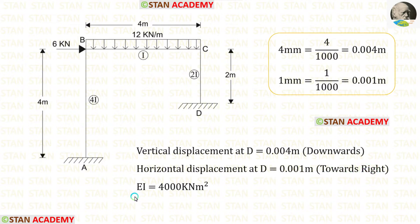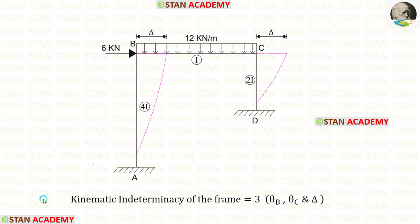The flexural rigidity EI is given as 4,000 kilonewton meter squared. This frame is a sway type frame. Let us assume that the sway occurs towards the right side.